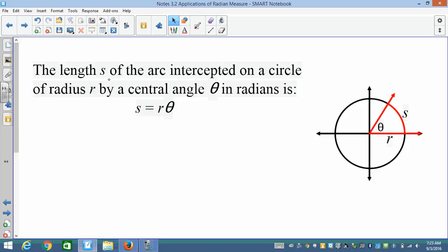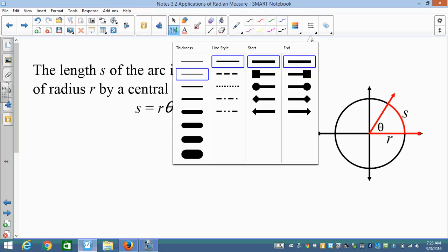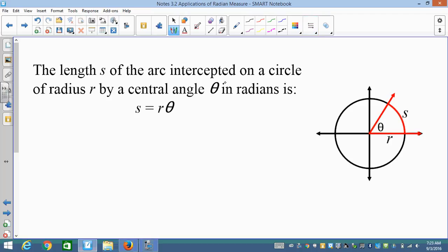So the length S of the arc intercepted on a circle of radius R by central angle theta in radians—this is actually a very important one—we're talking radians. You will not get the same answer in degrees. So S equals R theta. This little bit part of the arc is going to be theta times the radius.